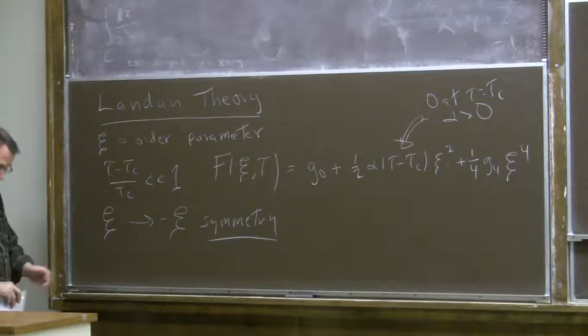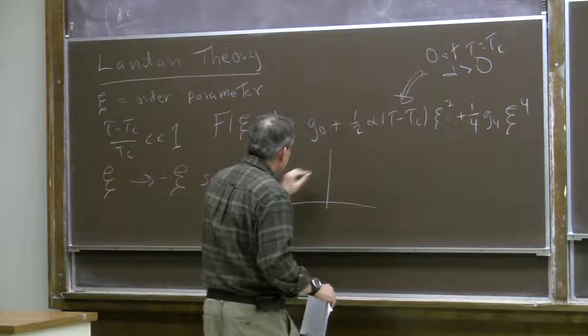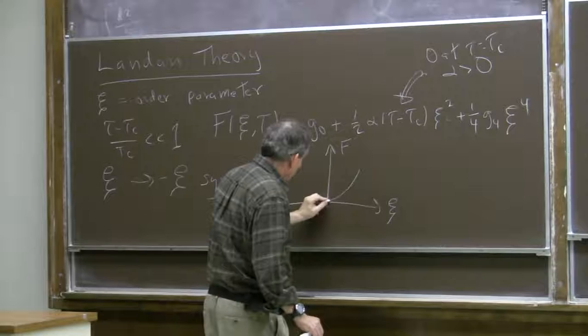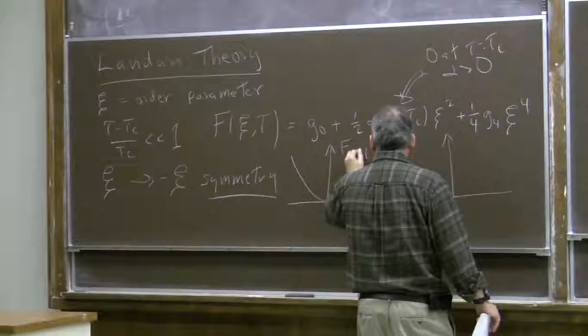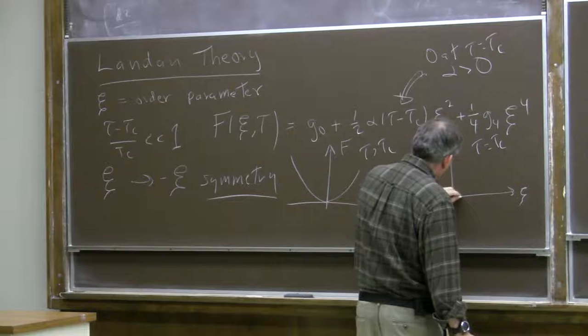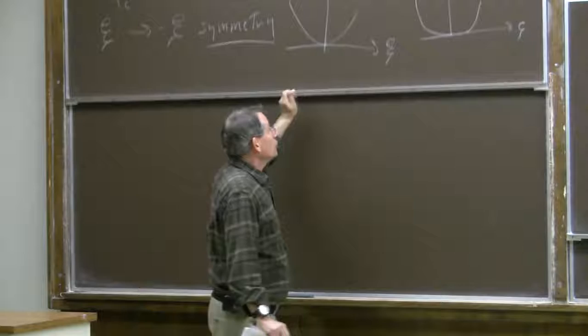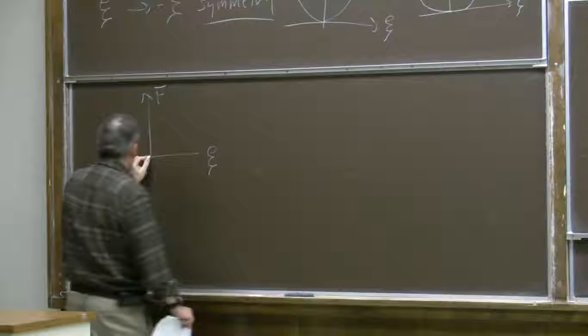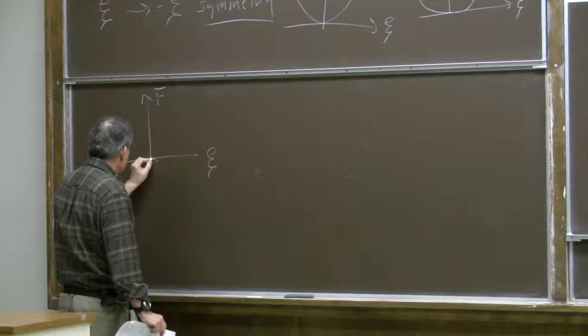The next most important term is the fourth power. When the temperature is above the critical temperature, the free energy as a function of order parameter is quadratic in leading order. Right at the critical temperature, the free energy has no quadratic term, only a quartic one, so it gets very flat. As the temperature dips below T_c, the quadratic term has a negative coefficient so it turns down, but then the quartic term wins and it turns over.